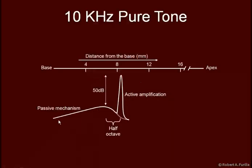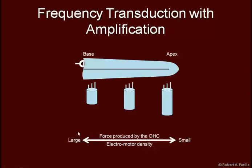In the absence of amplification, we're looking at only passive movement. A 10 kHz pure sinusoidal wave begins to degrade as it continues moving, and without amplification it would continue along a dotted line and disappear. However, because of the Prestin molecules, we see a sharp spike with about 50 dB amplification, shifted about a half octave. In the shorter hair cells at the base, there is a much larger density of these Prestin electromotors, generating greater force there than at the apex. The stiffness gradient of the basilar membrane, combined with the higher electromotor density and greater force at the base, allows for greater amplification at the base and is what enables us to hear higher frequencies.